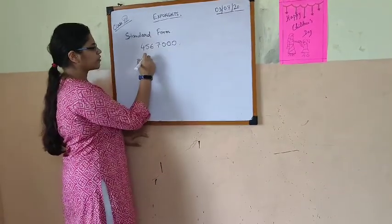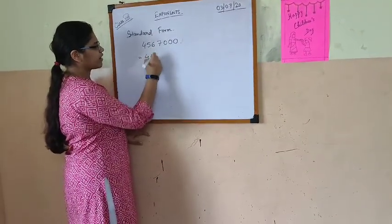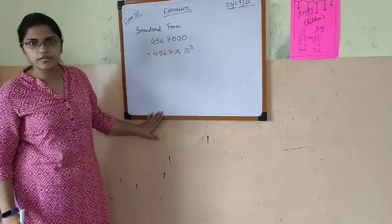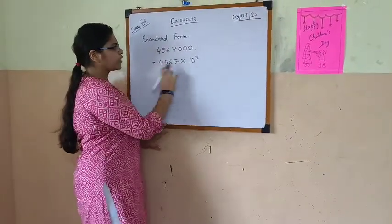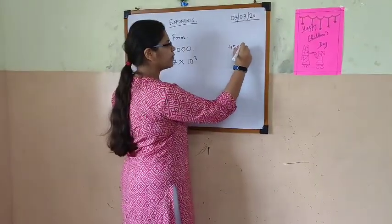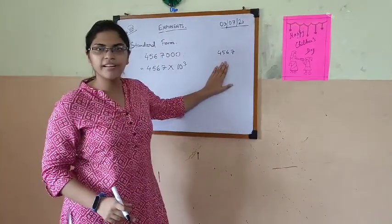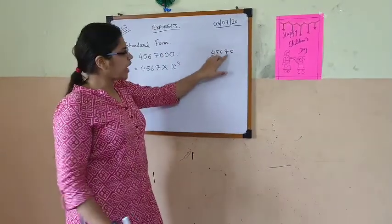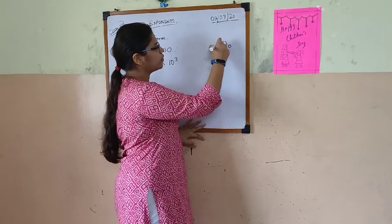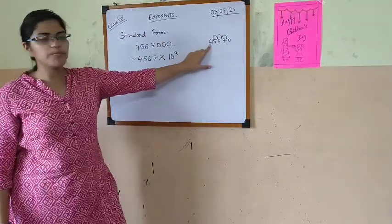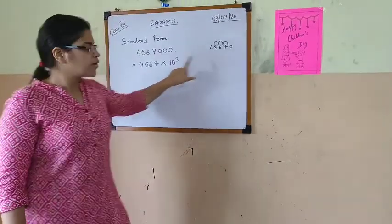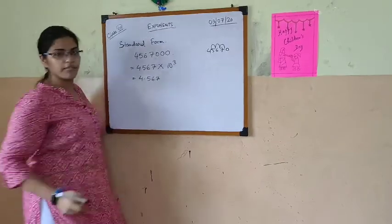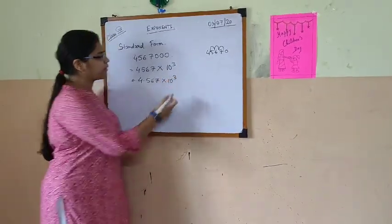So there we have 3 zeros, so we can straight away write it as 4,567 into 10 to the power 3, because there are 3 zeros. So now we have 4,567. So that means if I write this number in decimal, this will become 4,567.0. Now standard form means we have to put the decimal point after 1 digit. So that means here after 4 we will have a decimal point: 4.567. And this 10 to the power 3 will remain the same.